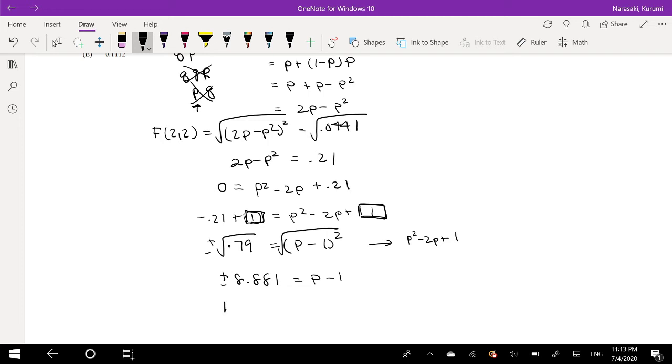So it's going to be equal to 1 plus or minus, oh wait, that's why I was like, interesting. So this is 0.79, which is equal to 0.8881. So it's 1 plus 0.8881 equals P.